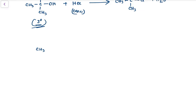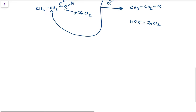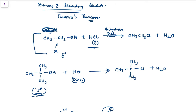The ZnCl₂ acts as a Lewis acid, accepting the lone pair of electrons from the oxygen of CH₃CH₂OH. It forms a coordination bond, due to which a δ+ charge is formed on the oxygen atom, leading to cleavage of the C-O bond. The chloride anion then comes and forms a bond with the carbon atom, giving CH₃CH₂Cl plus ZnCl₂ coordinated with OH. The Gross process name can only be used for primary or secondary alcohols reacted with HCl gas in the presence of anhydrous ZnCl₂, not for tertiary alcohols where concentrated HCl is used.